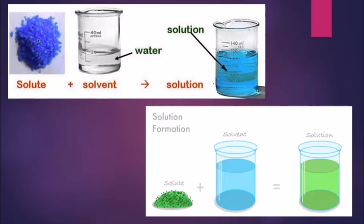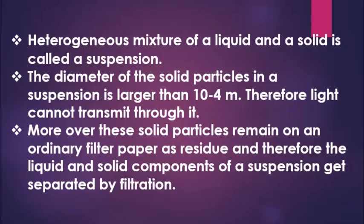We also have gas in liquid — for example, chlorinated water. So the types are: liquid in liquid, gas in liquid, solid in solid, and the fourth type is gas in gas. For example, air is also a homogeneous mixture, and this is the example of gas in gas.